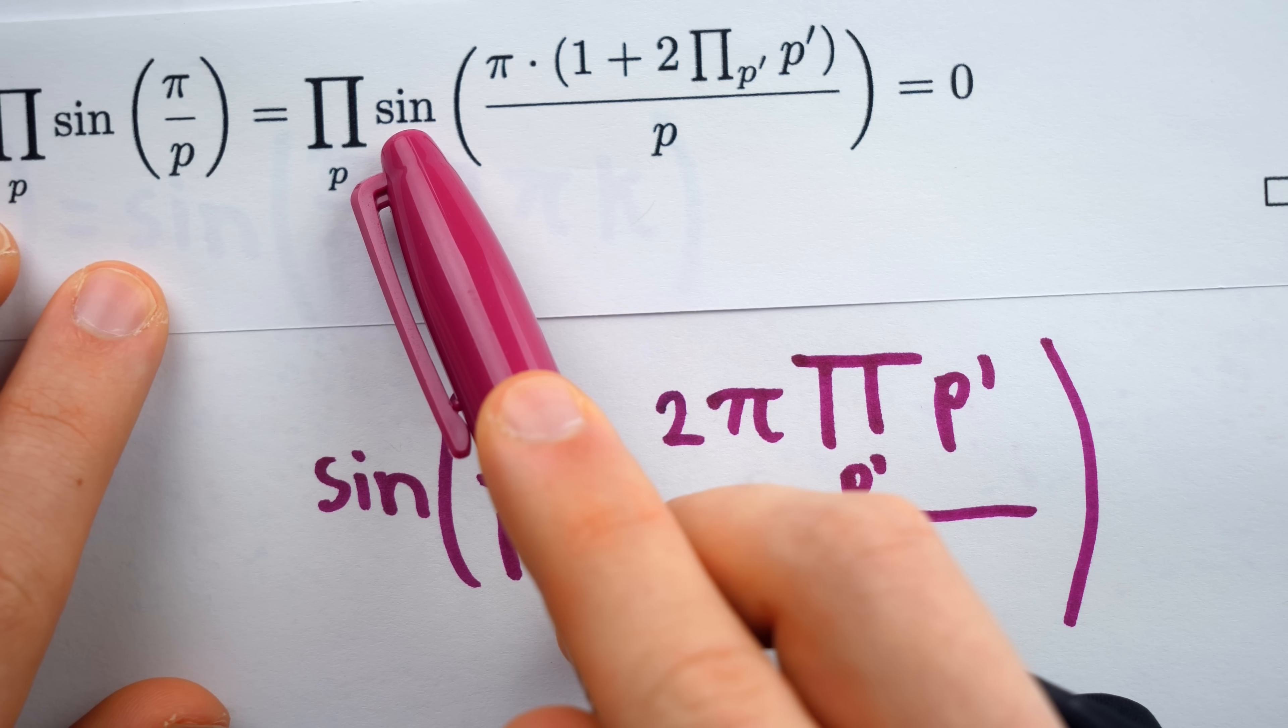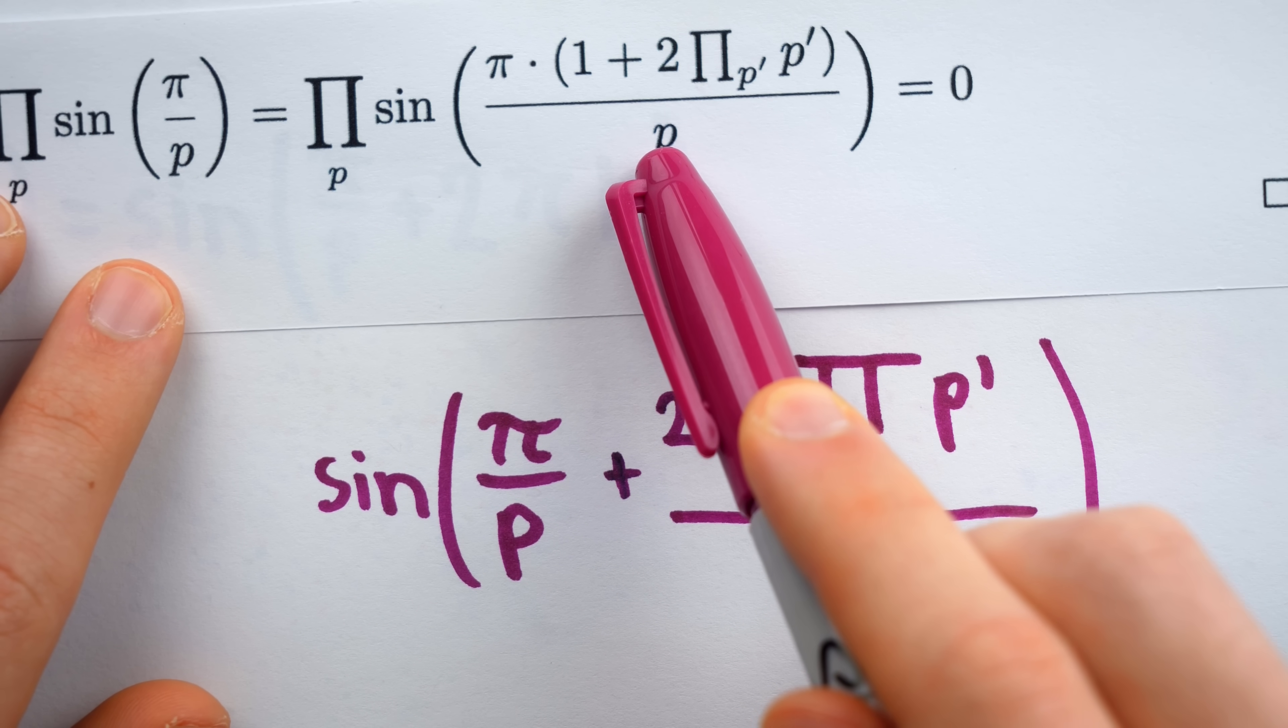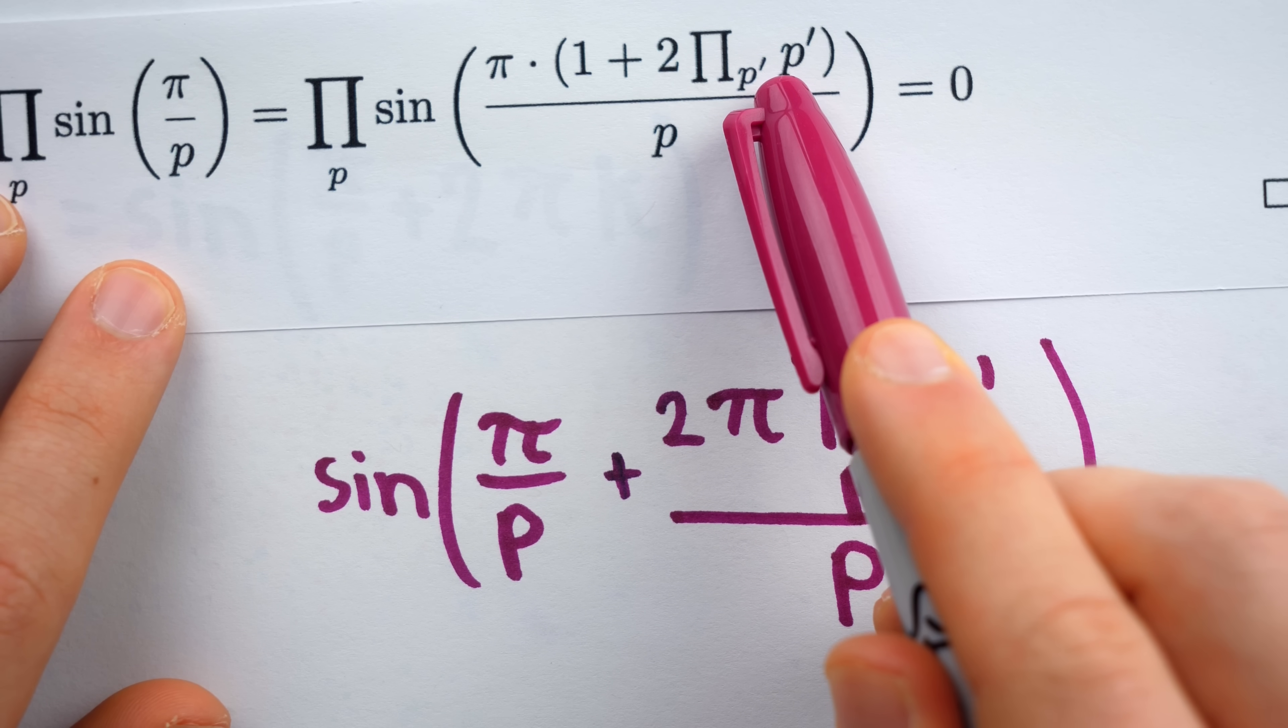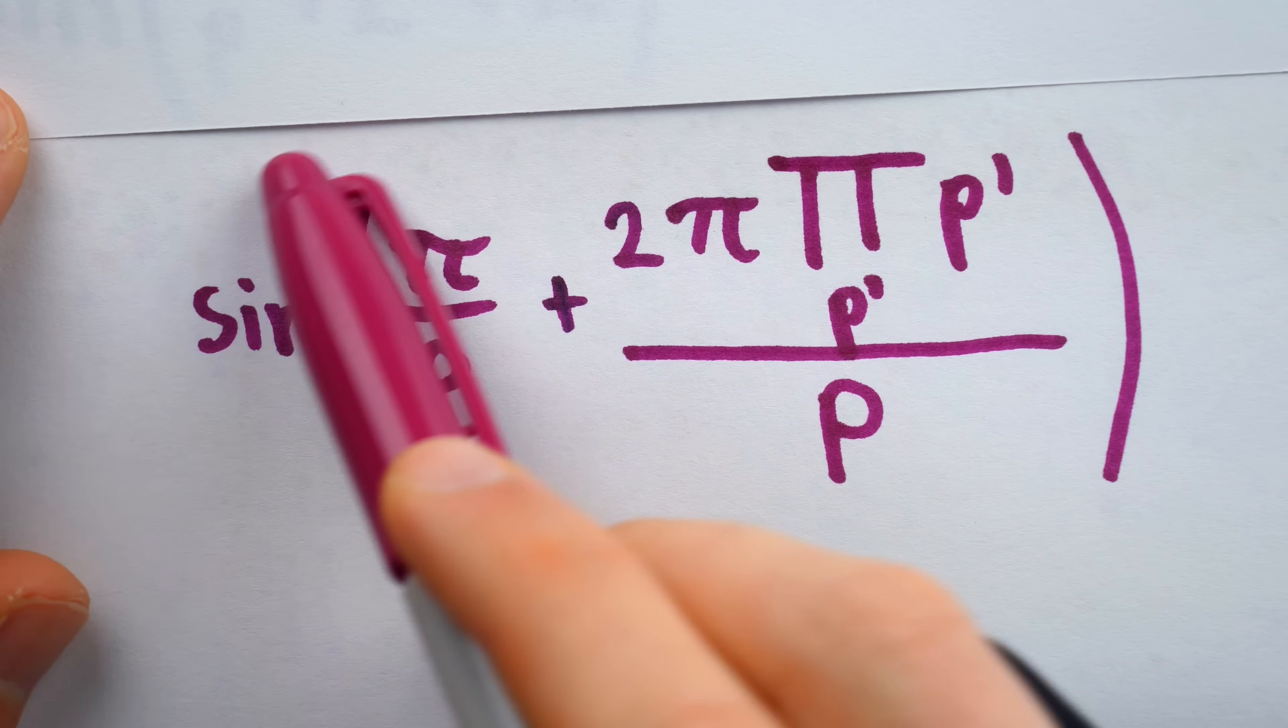So in each sine function, p is taking on the value of a different prime number. But within each individual sine function, the p primes are all getting multiplied together, and they are ranging over every possible prime number. And that's how we know this works.